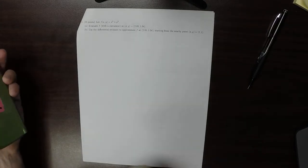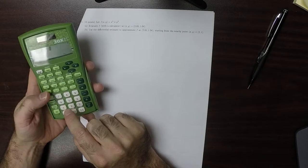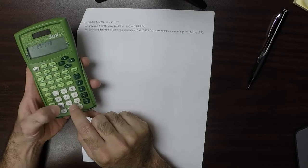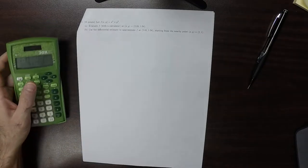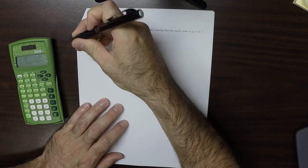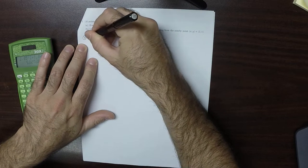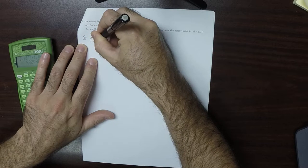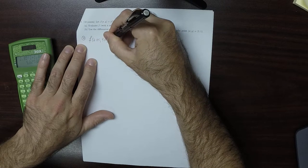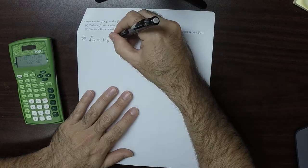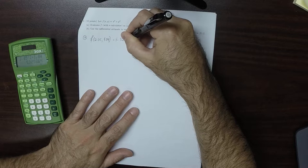So evaluate f with a calculator, so that'd be 2.05² plus 1.04³. So for part a, f evaluated at 2.05, 1.04 is 5.327364.